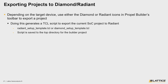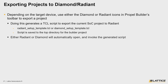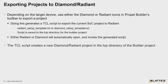By clicking either of the icons mentioned before, either Diamond or Radiant will also launch after generating these scripts, and then it will automatically invoke these scripts in order to create a new project in either tool. The new Diamond or Radiant project that is generated will be located in the top of the directory of your Propel Builder SoC project.